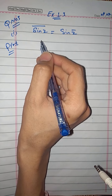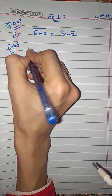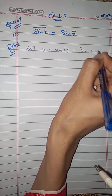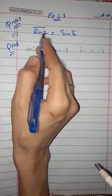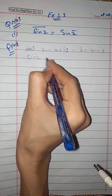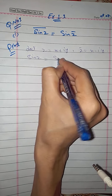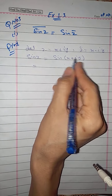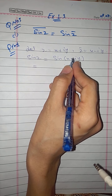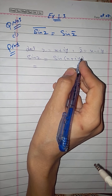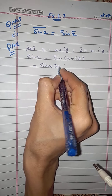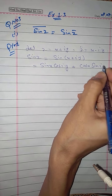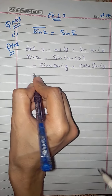First we have to consider: let z = x + iy, so z conjugate = x - iy. Similarly, first we take sin(z) on the left side. The value is sin(x + iy). Now we have to remember: sin(α + β) = sin α cos β + cos α sin β. Then we will expand this: sin x · cos(iy) + cos x · sin(iy).